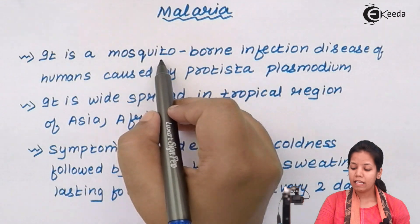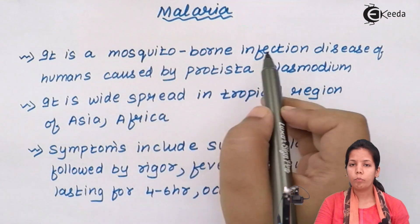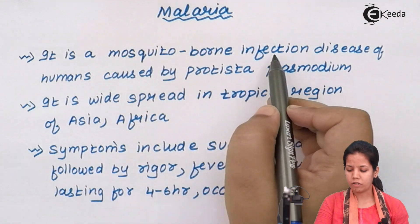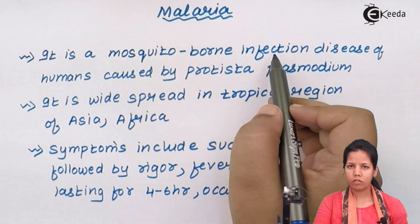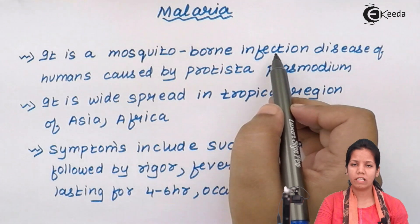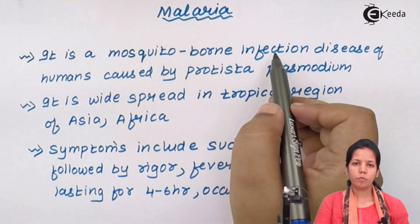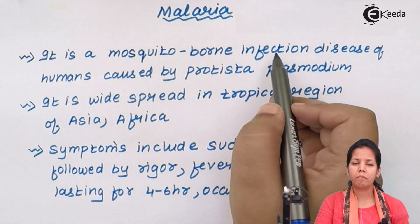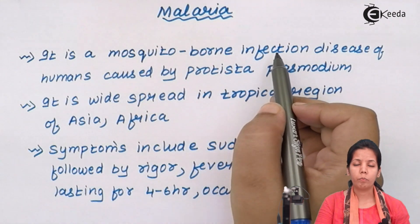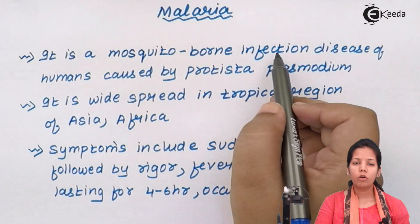Malaria is a mosquito-borne infection. When I say mosquito-borne infection, what I am trying to say is that Plasmodium vivax, the causative agent of malaria, uses the mosquito — basically the female Anopheles mosquito — as its carrier.